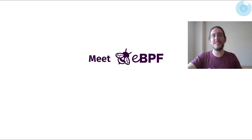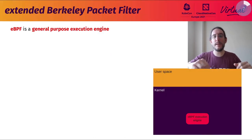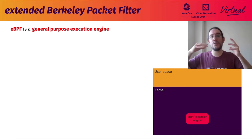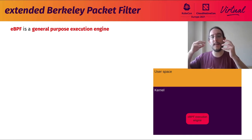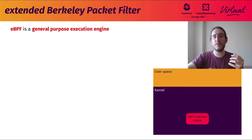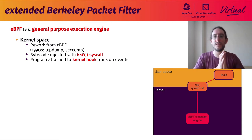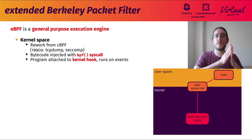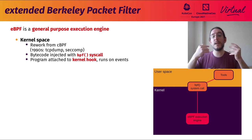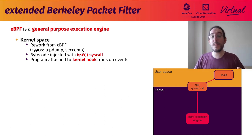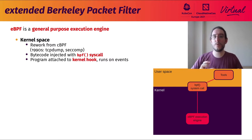The answer of course is eBPF. eBPF is a general-purpose execution engine to really implement programs defined in user space inside of the kernel. Historically it was built on top of what is now called classic BPF, which was used with tcpdump or seccomp to filter packets to copy to user space or syscall arguments respectively. Nowadays eBPF uses the BPF syscall to take bytecode from user space and inject it into the kernel where it's executed.